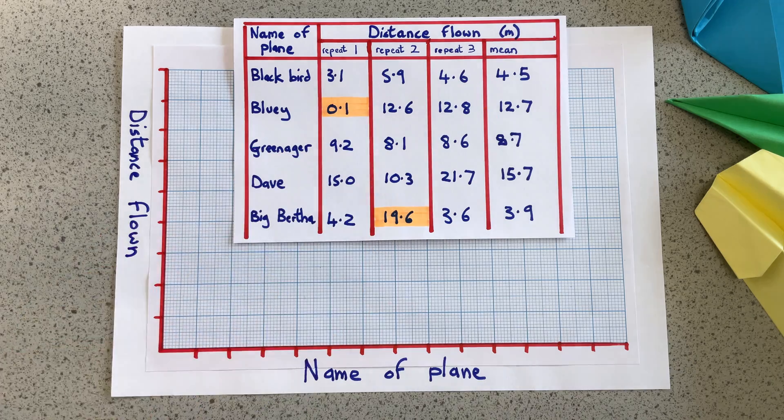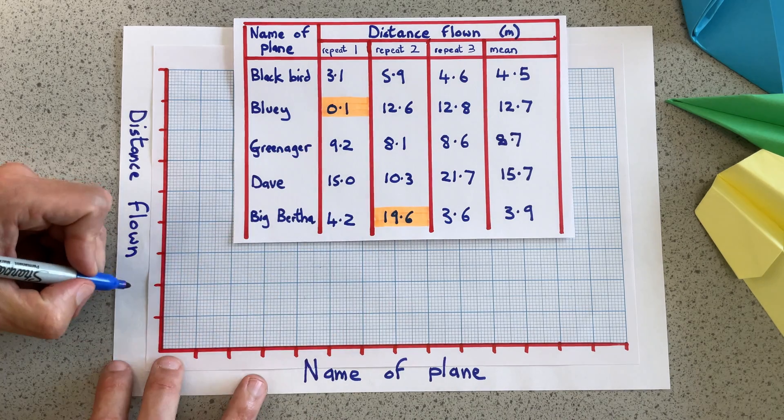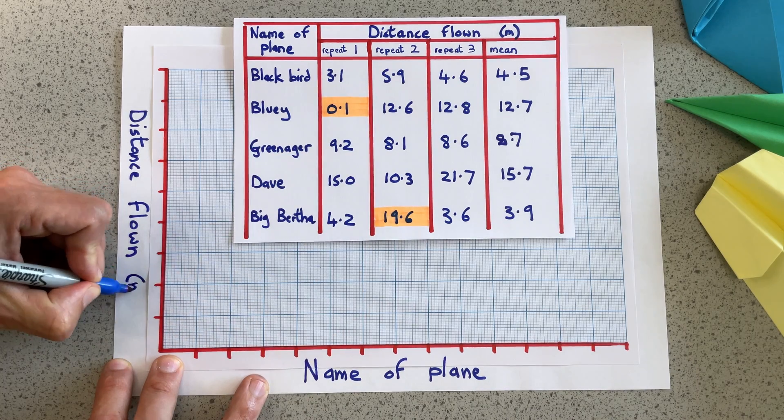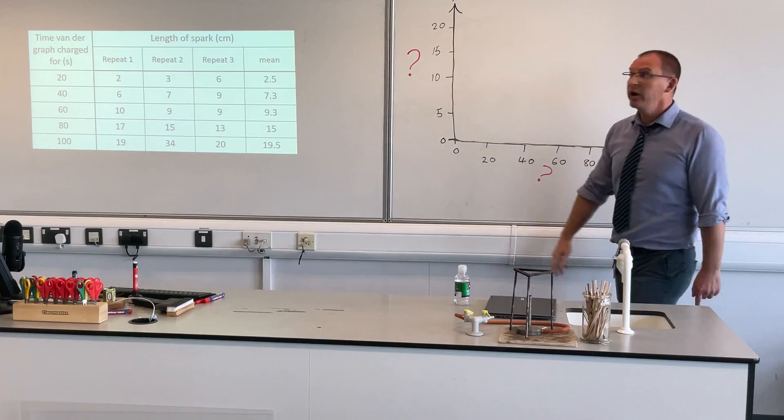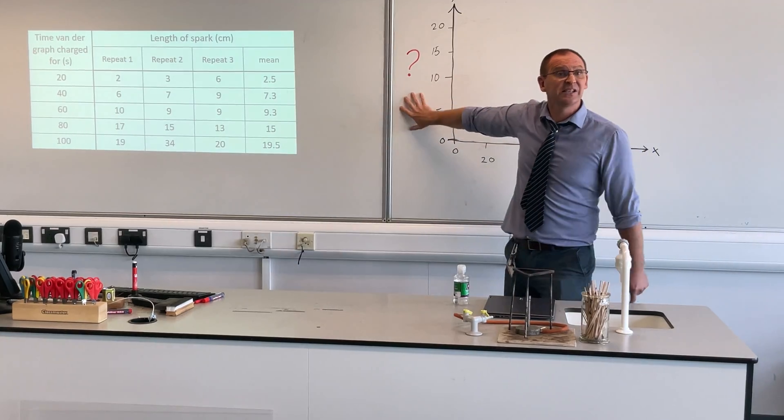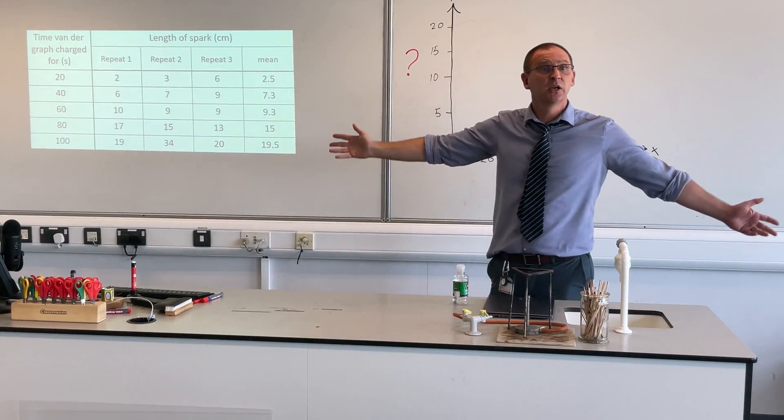The units go in brackets, and for the labels — remember, everybody, where's the label? In the table. Perfect, that'll be sorted.